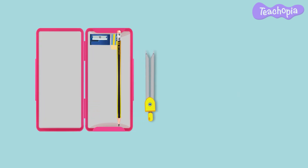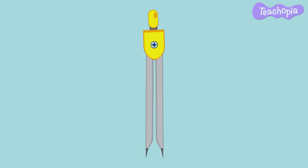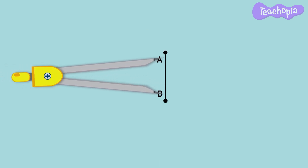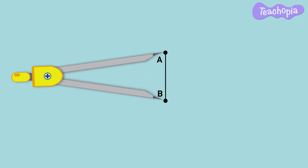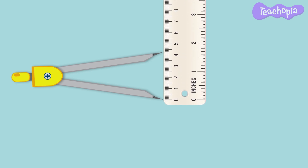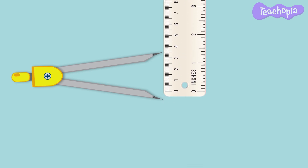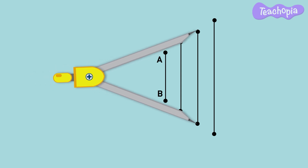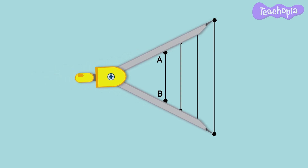Let us learn about the divider. A divider has two pointed tips that help us compare lengths. To measure the length of a line segment, adjust the arms of the divider and place the two pointers at both endpoints of the line segment. Then place the divider with the measured length on a scale to find the length. A divider can also be used to compare the lengths of line segments by aligning it with AB and moving it across the different line segments.